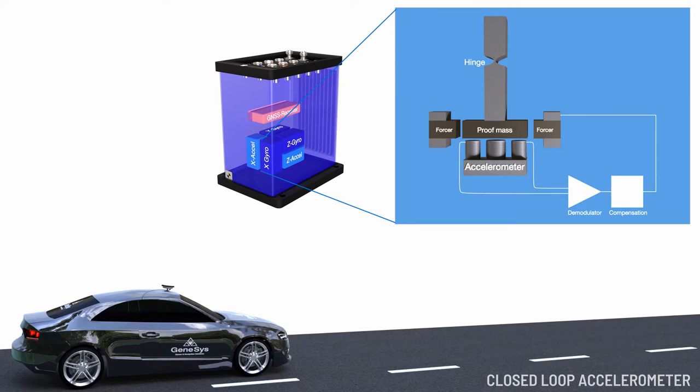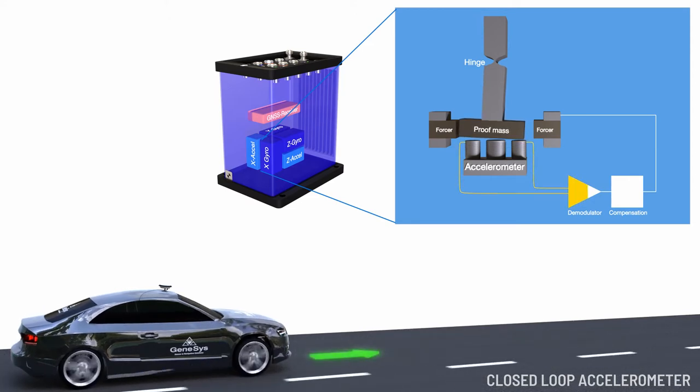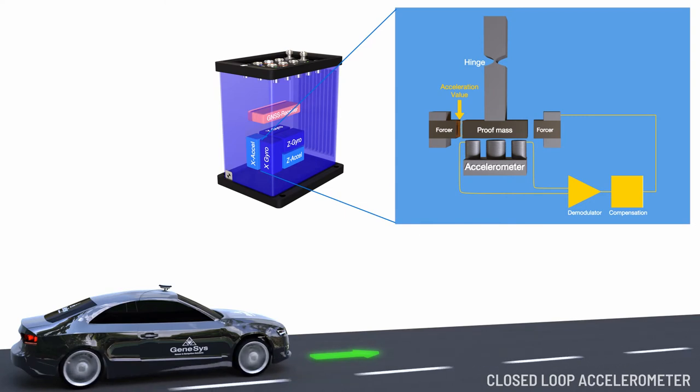The ADMA will be mounted in the vehicle. As soon as the vehicle accelerates, the proof mass in the closed-loop accelerometer moves in the opposite direction. As a result, the demodulator takes the changing voltage and modulates a signal that drives the forcers. The electrical value needed to push the proof mass back to the origin is the value of acceleration.